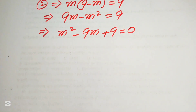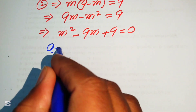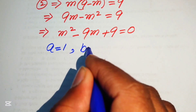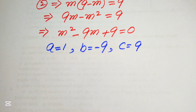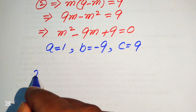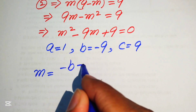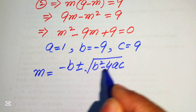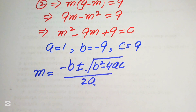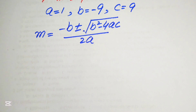We identify the coefficients: a equals 1, b equals minus 9, and c equals plus 9. The quadratic formula is m equals minus b plus or minus the square root of b squared minus 4ac, all divided by 2a. Now we substitute the values of a, b, and c.